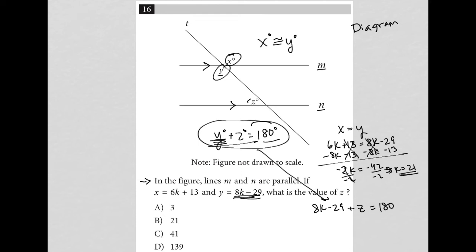Because k is 21, this becomes 8 times 21 minus 29 plus z equals 180. 21 times 8 is 168. So 168 minus 29 plus z equals 180. 168 minus 29 is 139.